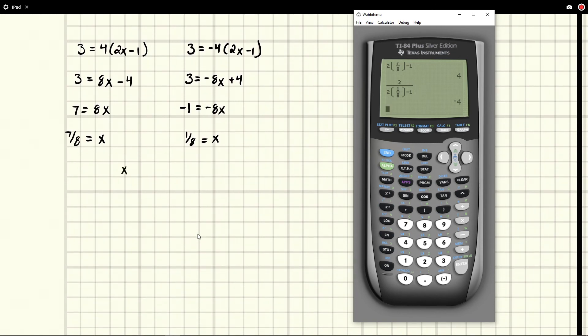We can say that x is an element of the set containing 1 eighth and 7 eighths. And then you would box this and this would be your answer.